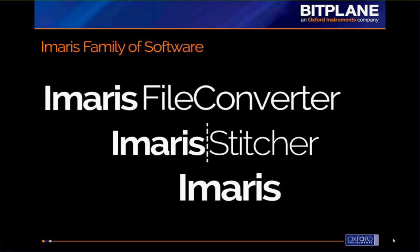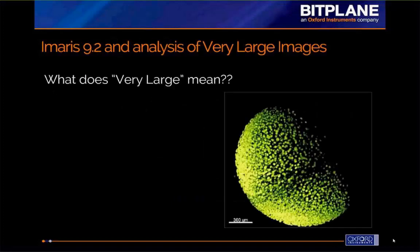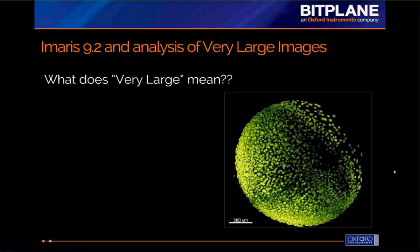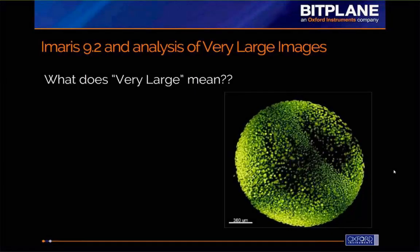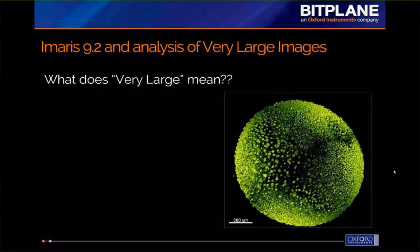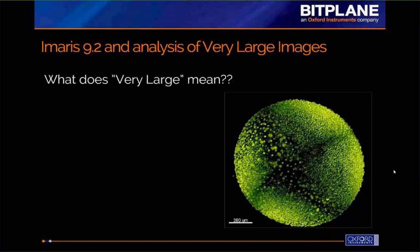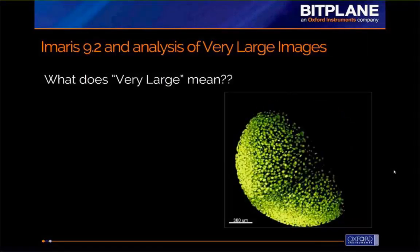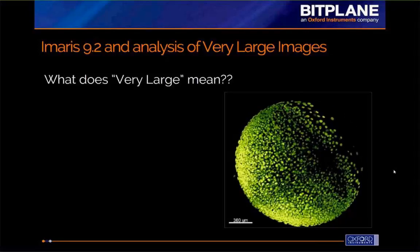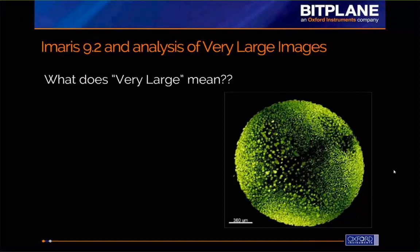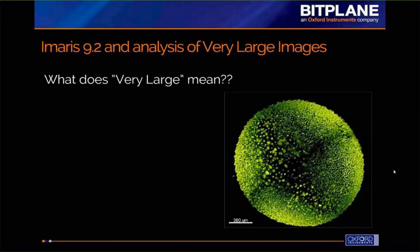I've been saying 'very large images' repeatedly, so what does 'very large' mean? It means different things to different people. For example, this time-lapse from a light sheet microscope of a zebrafish embryo is about two terabytes in size — certainly large by most standards. But 'very large' can also simply mean an image that's bigger than the amount of RAM on your system. In those cases, you will see a significant speed increase when using spots and tracking algorithms.